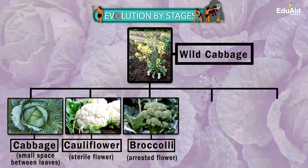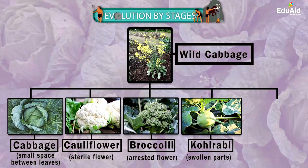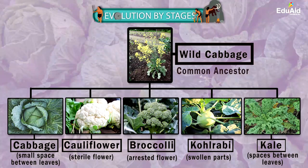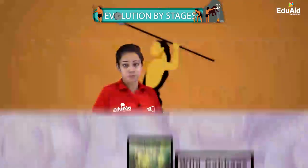On the other hand, some farmers went for the swollen parts of the wild cabbage plant, and this resulted in the vegetable called kohlrabi. And some farmers wanted large spaces between the leaves, and this resulted in the formation of the vegetable kale, which is a leafy vegetable. So we can see that the wild cabbage plant is a common ancestor to all these vegetables that we consume today as food.